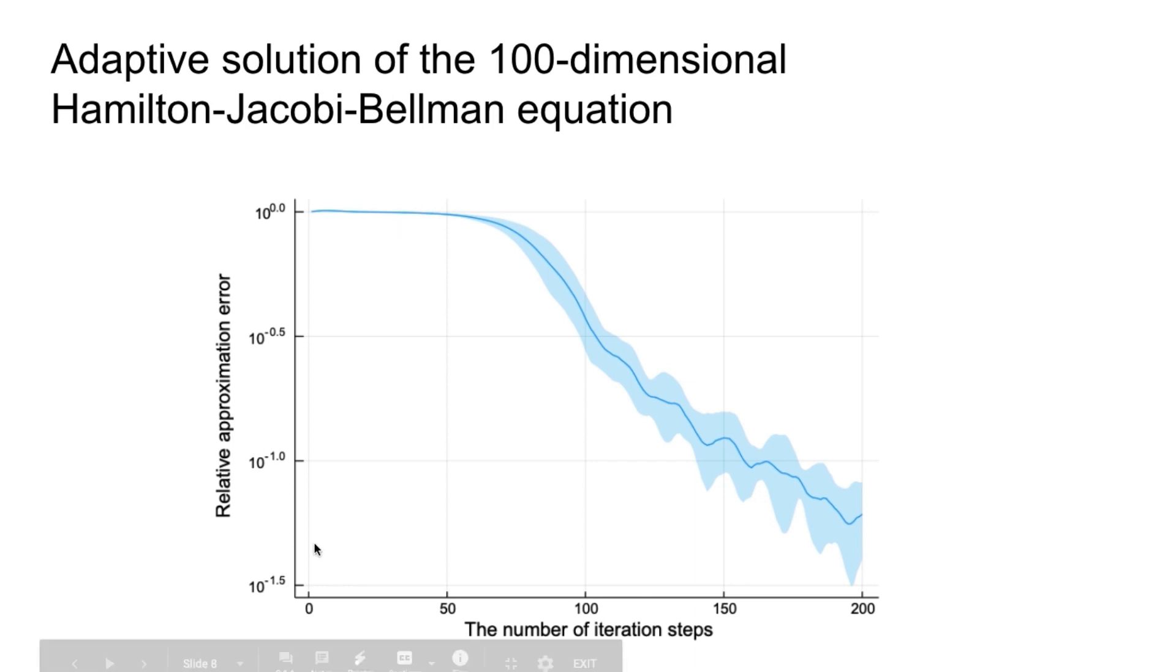On the x-axis, you have the number of iteration steps; on the y-axis, we have the relative approximation error. We can see that the error between the analytical solution and our predicted solution decreases and finally reaches some error. Our predicted solution will be very close to the real solution.